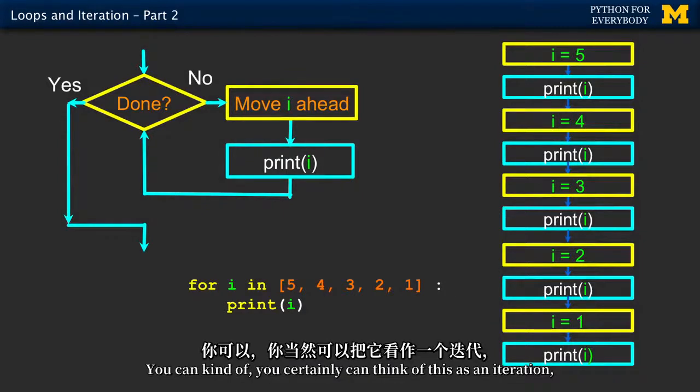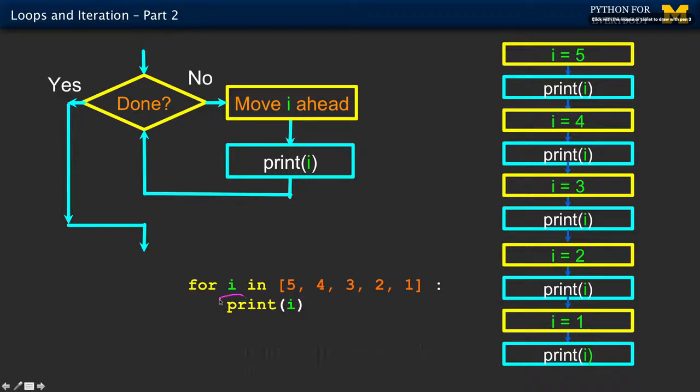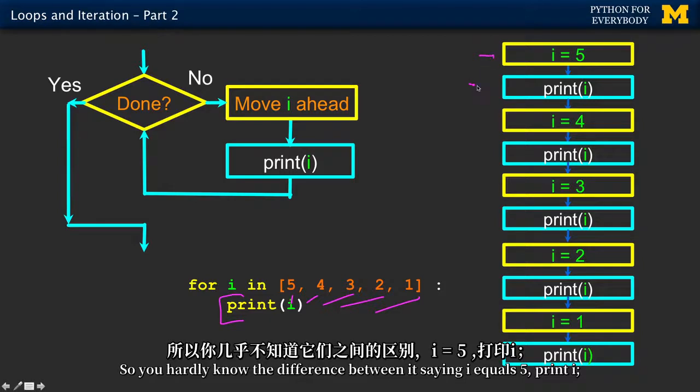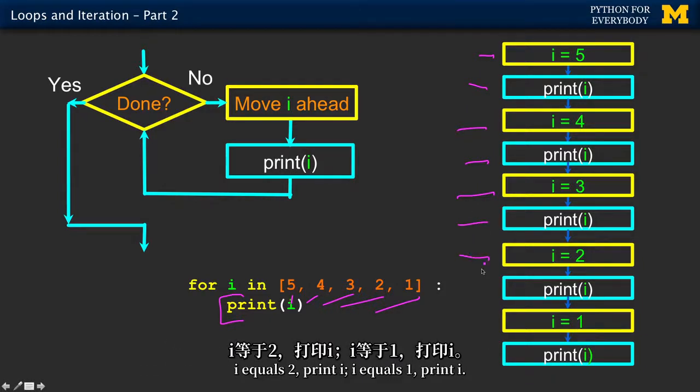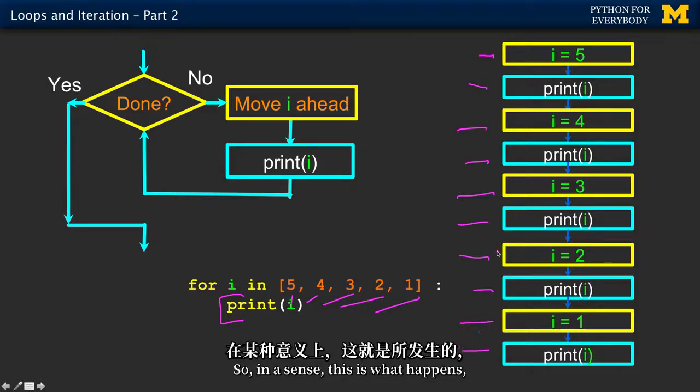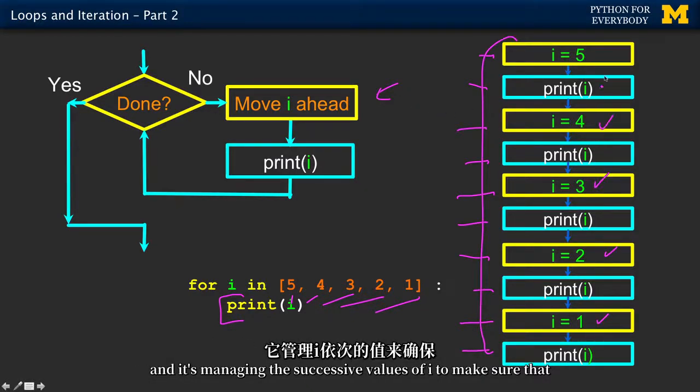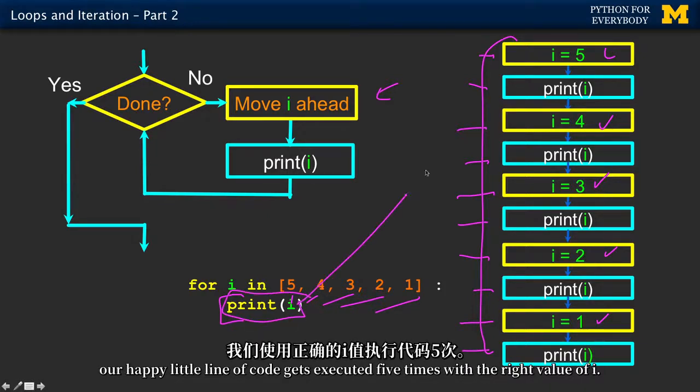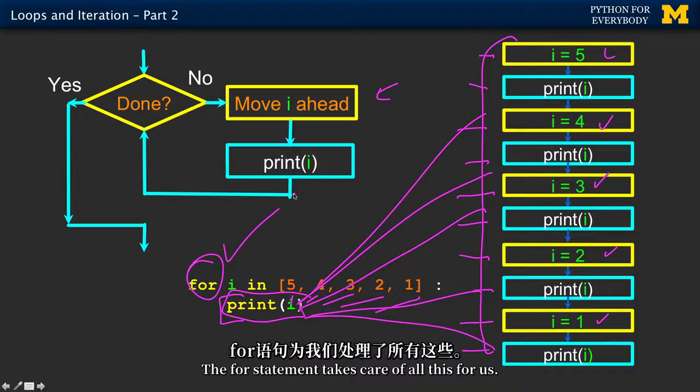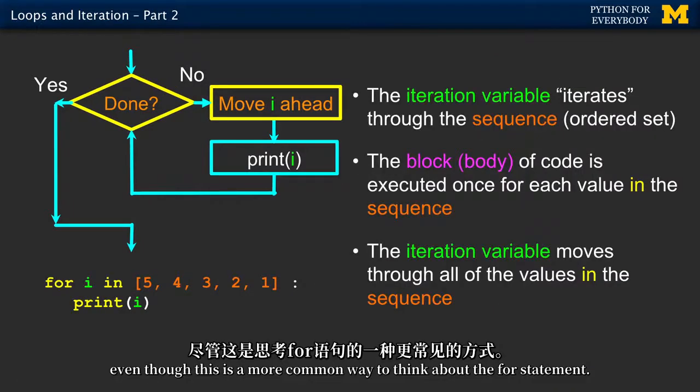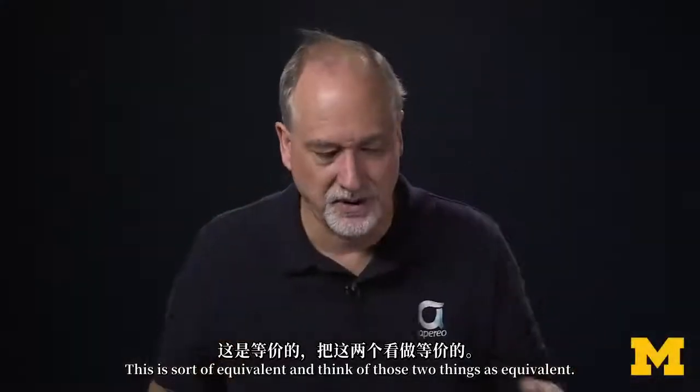So here's an interesting thing. You can kind of, you certainly can think of this as an iteration, but at some level it's really just a contract that says run this code five times with i taking on the value. So you hardly know the difference between it saying i equals 5, print i, i equals 4, print i, i equals 3, print i, i equals 2, print i, i equals 1, print i. So in a sense, this is what happens. Meaning that the for loop is telling us how long we're going to run, and it's managing the successive values of i to make sure that our happy little line of code gets executed five times with the right value of i. That is the job of the for statement. The for statement takes care of all this for us. So that's one way to think about the for statement. Even though this is a more common way to think about the for statement, this is sort of equivalent. And think of those two things as equivalent.